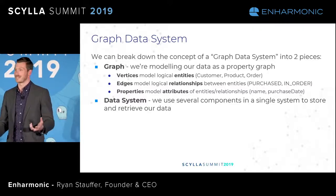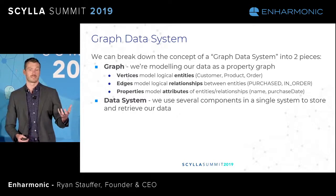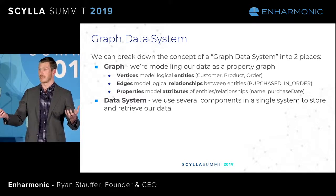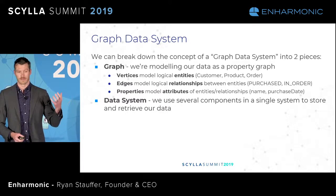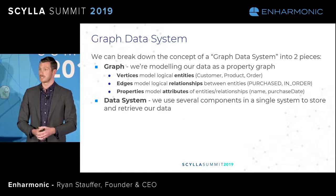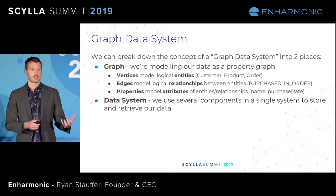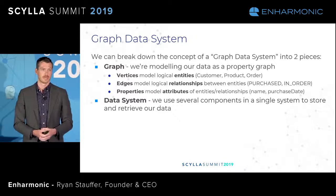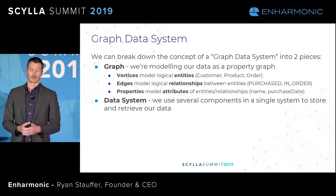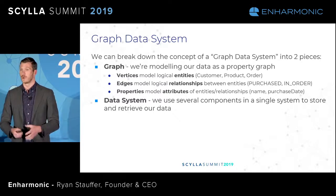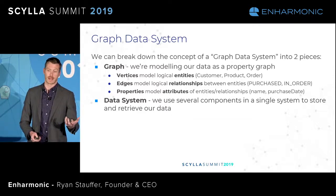So what is a graph data system? Fundamentally we can break it into two big pieces: graph and data system. By graph, we mean our data is modeled as a property graph — we have vertices, edges, and properties. Vertices tend to model entities like a product or a customer. An edge models the relationship between two entities, like a customer knowing another customer. A property models an attribute, like the name and age of a particular customer. The data system piece means we have multiple distinct components that, when combined, give us a single logical system we can interact with.